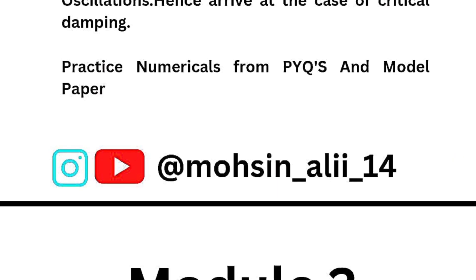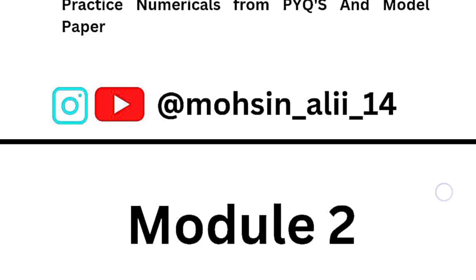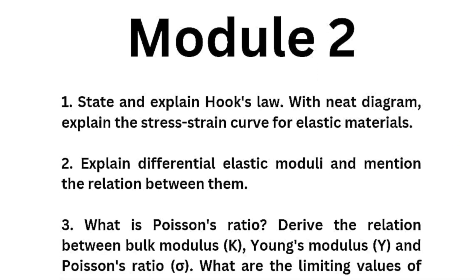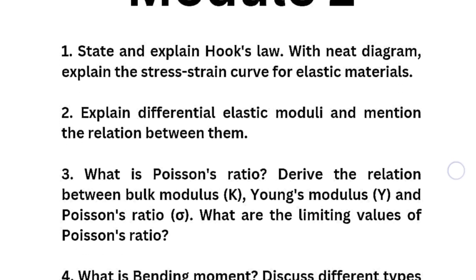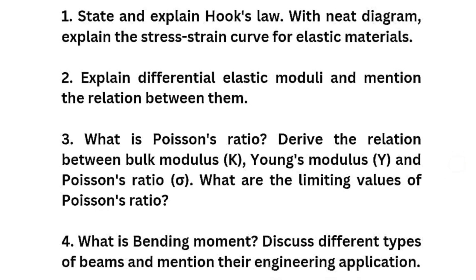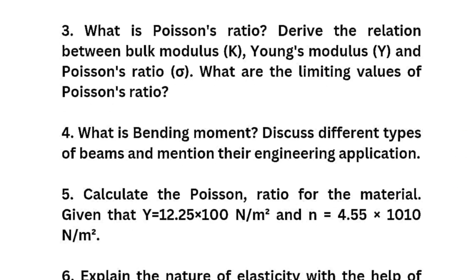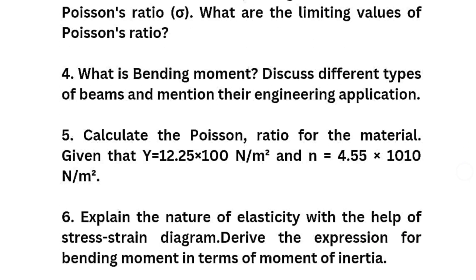Module 2 topics: state and explain Hooke's law with a neat diagram; explain the stress-strain curve for elastic materials; explain the different elastic moduli and mention the relationship between them; define Poisson's ratio; derive the relationship between bulk modulus, Young's modulus and Poisson's ratio; and most importantly, what are the limiting values of Poisson's ratio. Also, what is bending moment — discuss different types of beams and mention their engineering applications.